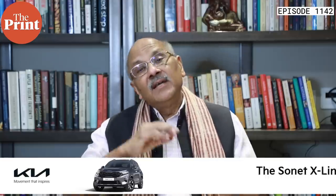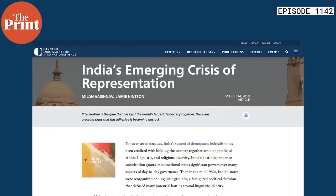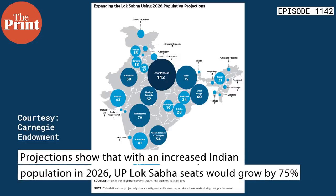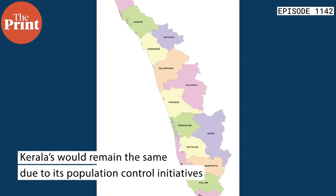We have a 2019 research paper by Milan Vaishnav and Jamie Hinton for Carnegie, reported in Hindustan Times. They project India's population in 2026 based on the 2011 census data, and conclude the size of Indian Lok Sabha would be 846. If the size of Lok Sabha is 846, then UP's share there will be 143 seats — an increase from 80 to 143, which is 78.75%. On the other hand, a state like Kerala, which has 20 seats now, will still have only 20 seats, because Kerala has been very responsible in controlling its population; its total fertility rate is well below 2.